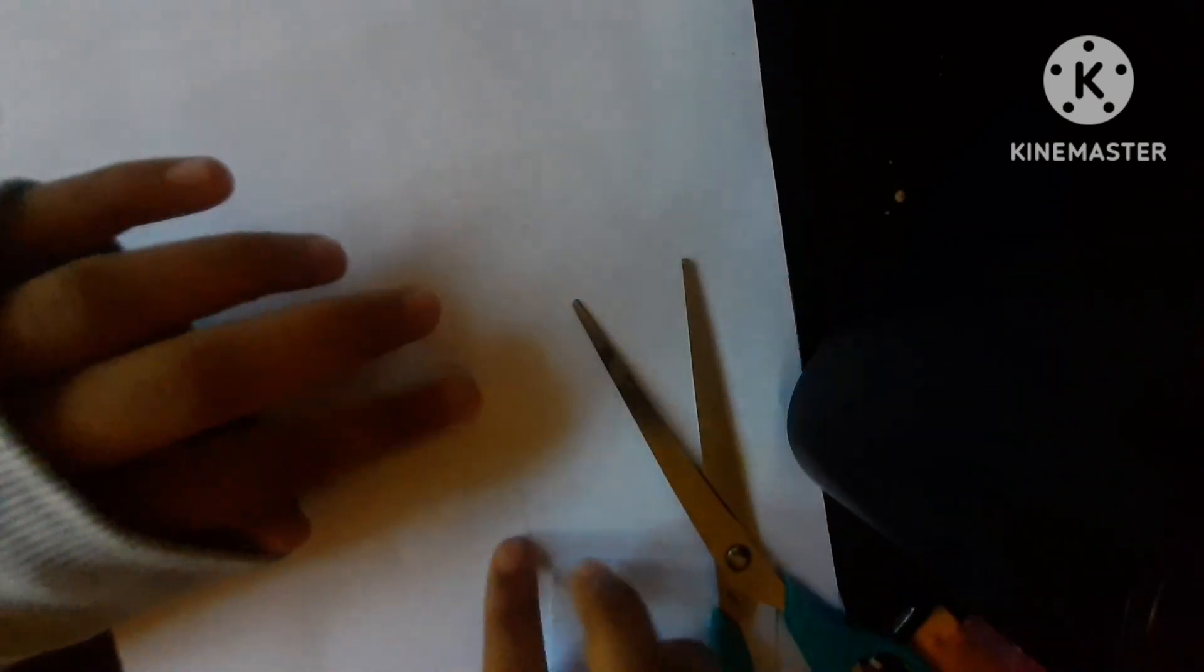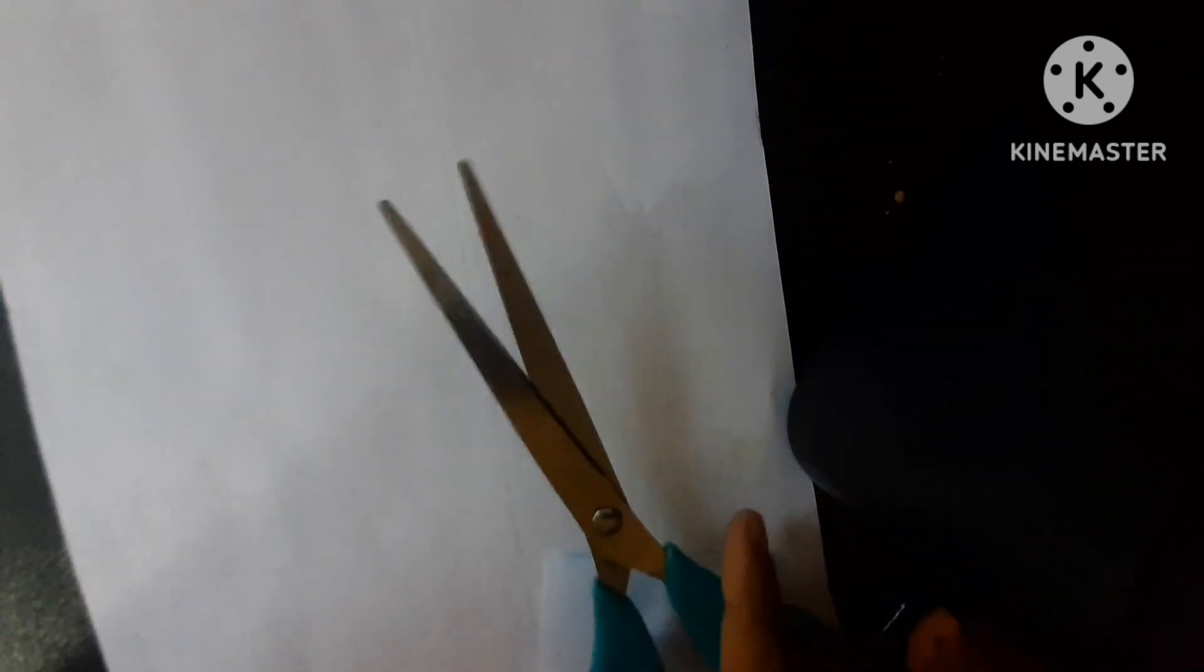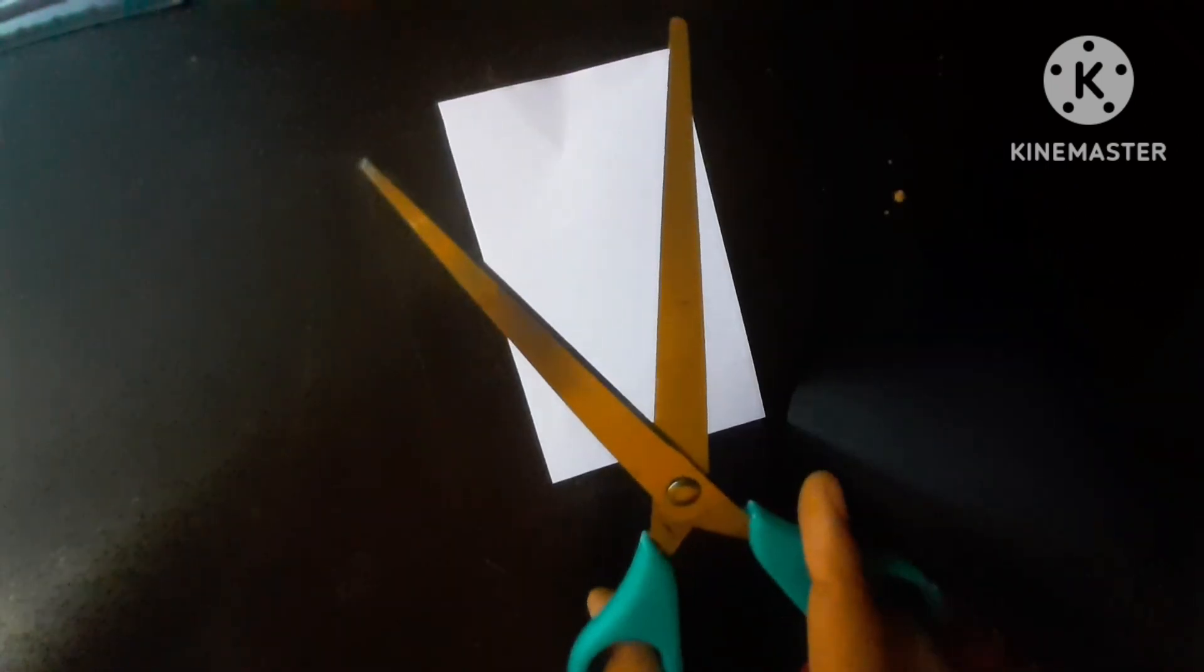It's pretty easy to make, so let's make it. Here I have taken a white paper. You can take any color paper you want. Now we have to cut it in any shape you like.